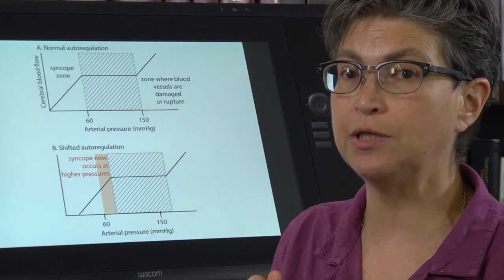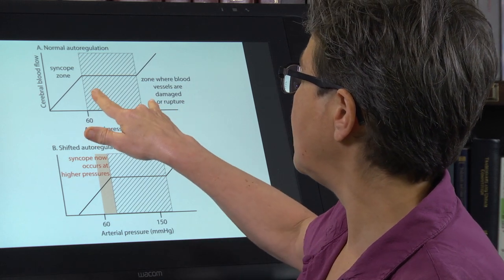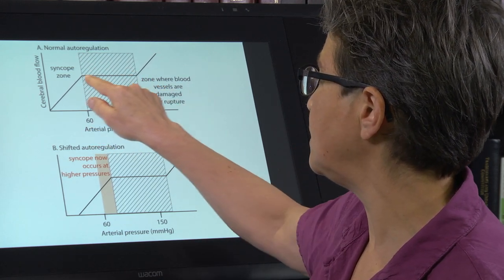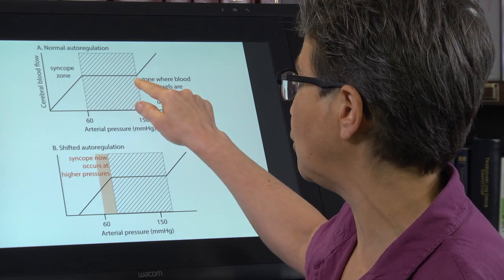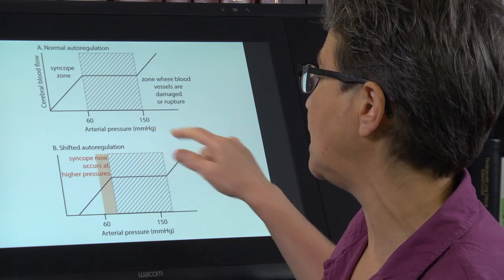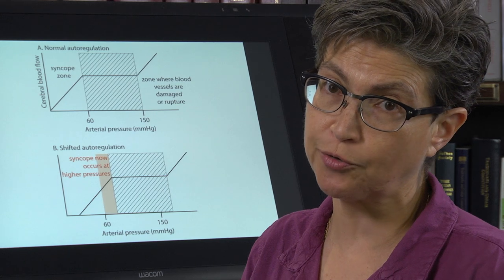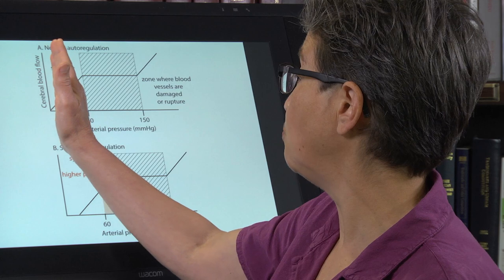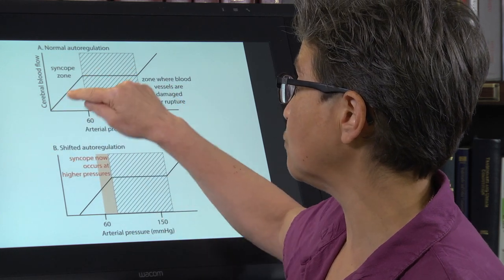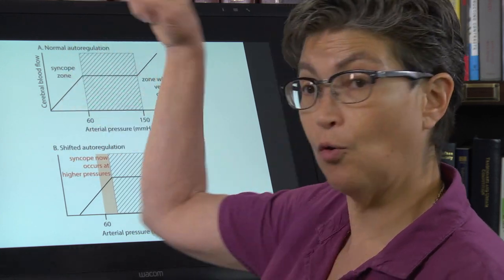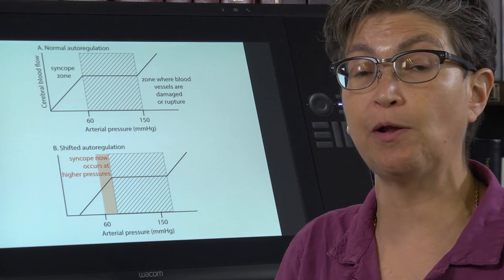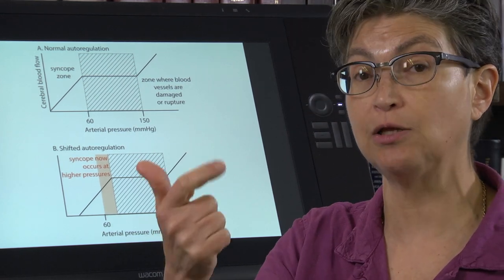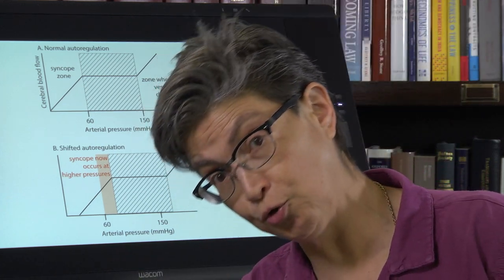Autoregulation in the brain allows you to operate with the needed amount of cerebral blood flow between about 60 and 150 millimeters of mercury of mean arterial pressure. If you go below that, cerebral blood flow will go down. What will happen if you don't have enough cerebral blood flow? You will faint. Faint means lose consciousness, lose postural tone. Down you go.